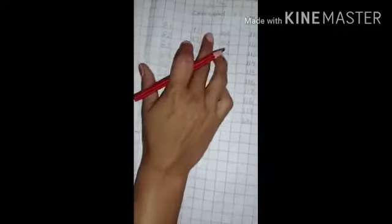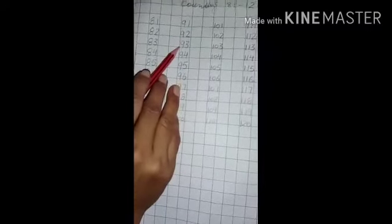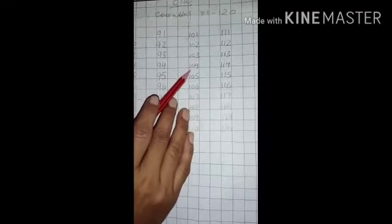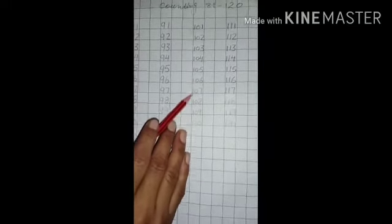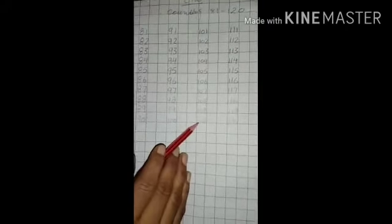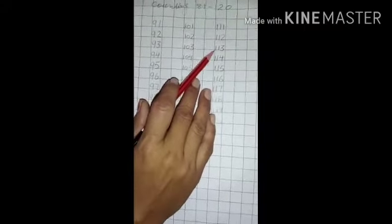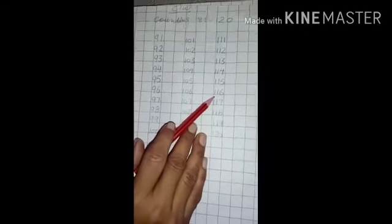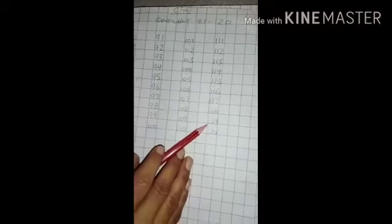Your oral homework is counting 81 to 120. 81, 82, 83, 84, 85, 86, 87, 88, 89, 90, 91, 92, 93, 94, 95, 96, 97, 98, 99, 100, 101, 102, 103, 104, 105, 106, 107, 108, 109, 110, 111, 112, 113, 114, 115, 116, 117, 118, 119, 120.